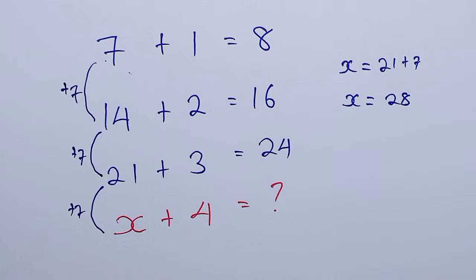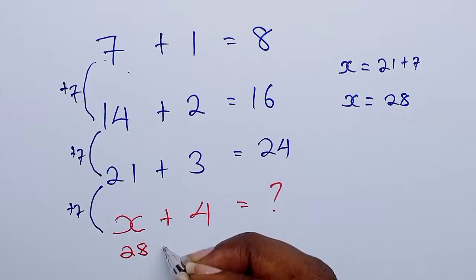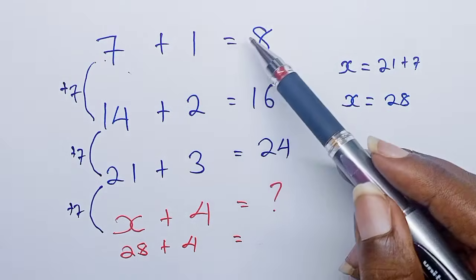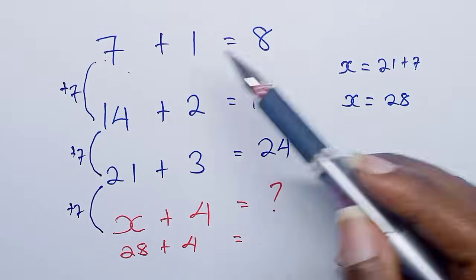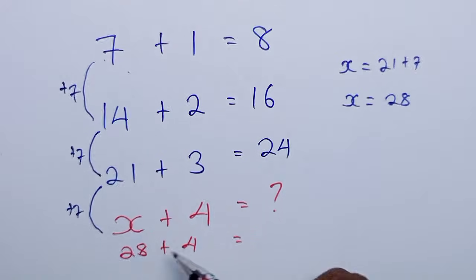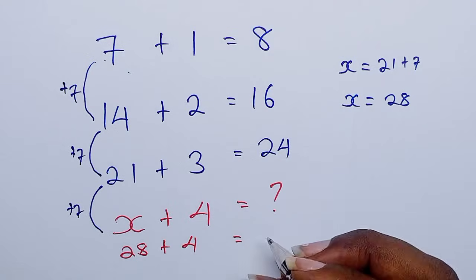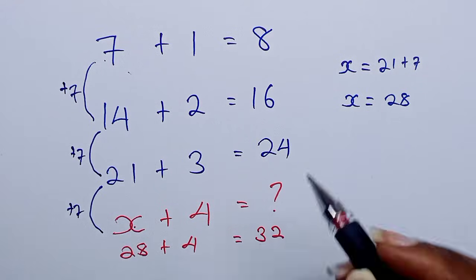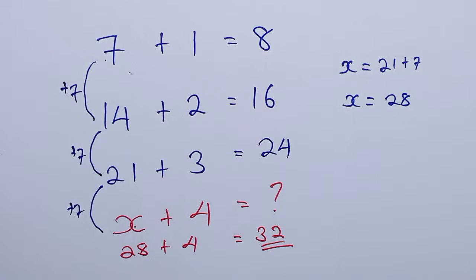Therefore, here we shall have 28 plus 4. Since the other equations gave the exact addition values, 28 plus 4 should do the same. So 28 plus 4 is 32. X is 28 and this missing value is 32.